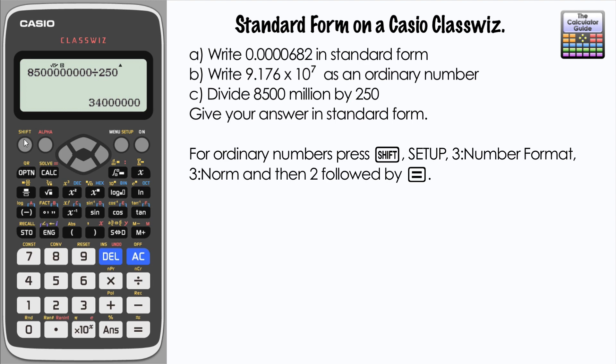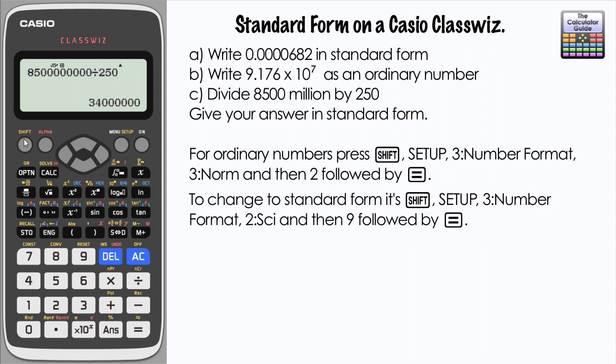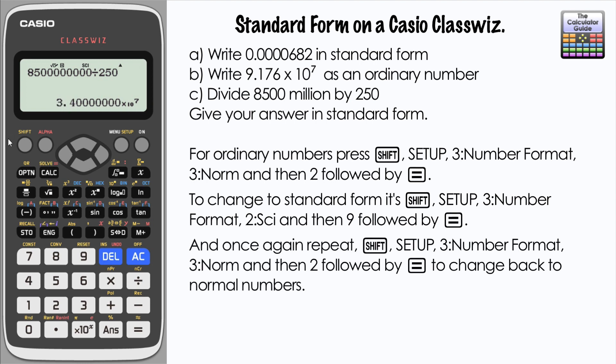Remember our answer is in normal 2, that's ordinary numbers. We want to give our answer in standard form, so I'm going to use the science notation: shift, set up, 3, 2, and then 9 will have the full display. That's 3.4 times 10 to the 7. Again just ignore these insignificant zeros that we've got there.